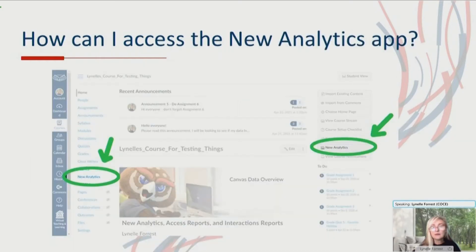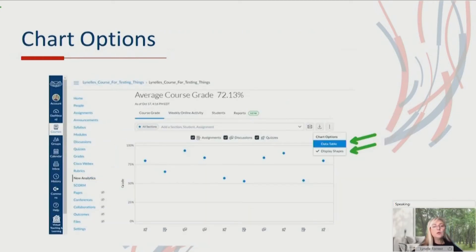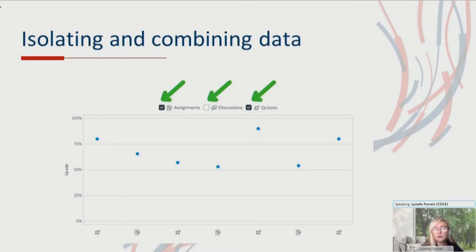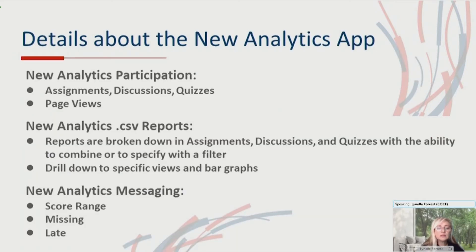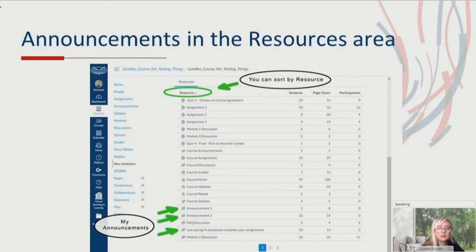So on the right-hand side of your course, it should always be there. If it's not in the navigation area, you'll have to add it through settings. In New Analytics, you have chart options. I like to see this because I'm more of a visual person than a numbers person. But if you're a numbers person, looking at the table view is quite handy. Inside this area, you can isolate things you're looking for — we're looking at things that are graded. If I just want to look at my assignments, I can do that, or quizzes and assignments, or just the discussions. You can drill down through your data, and there are details about participation and sorting, which is a really nice feature in New Analytics.